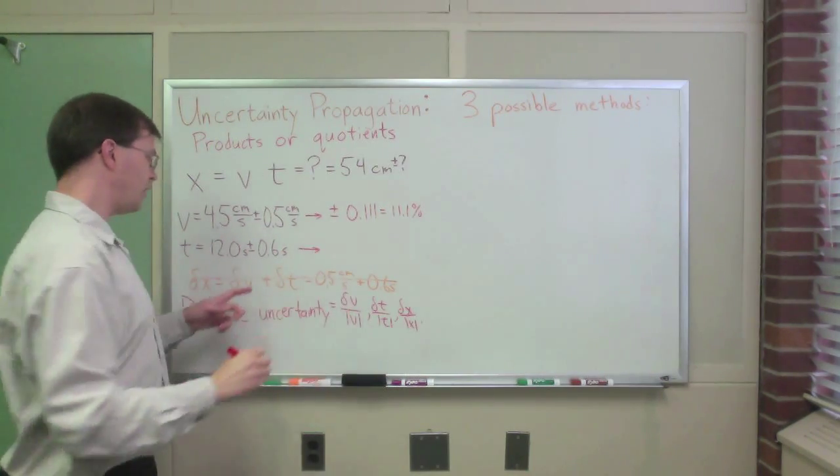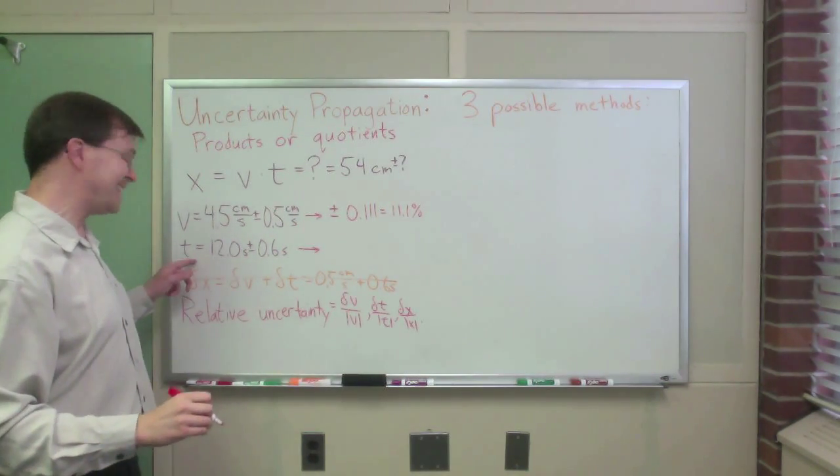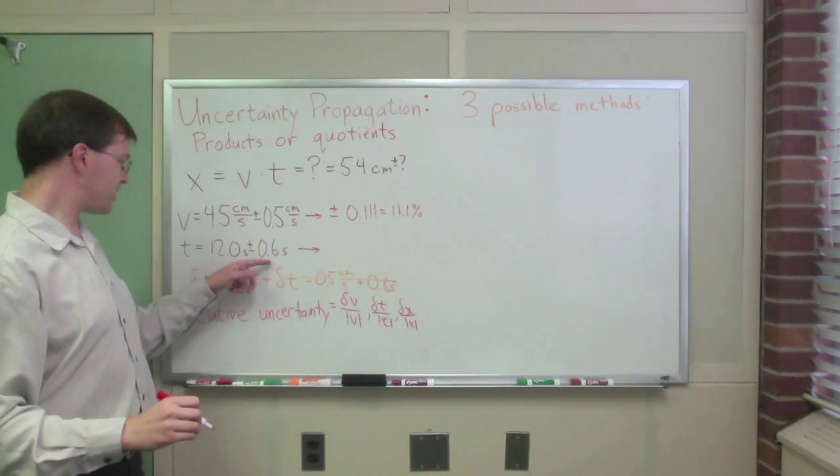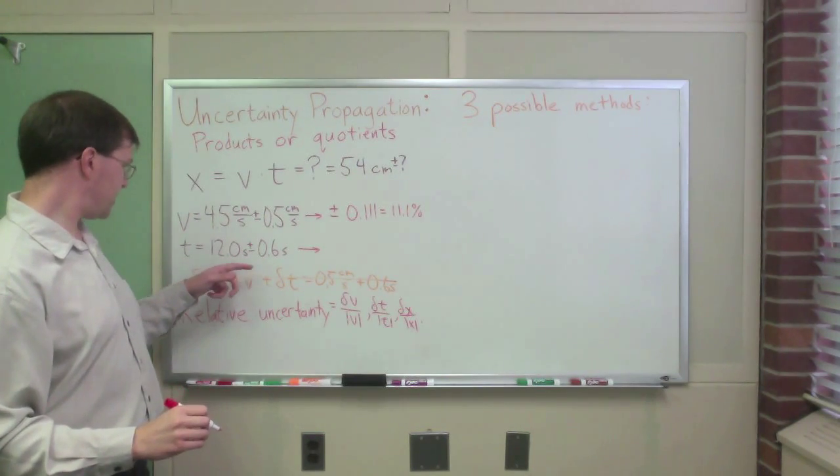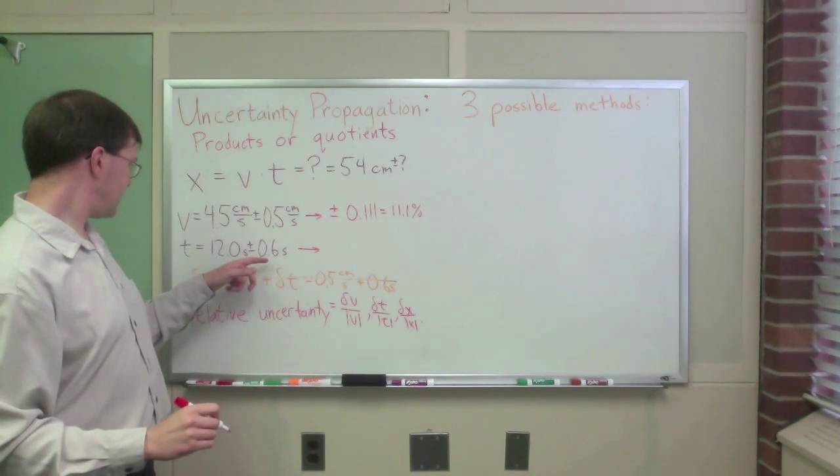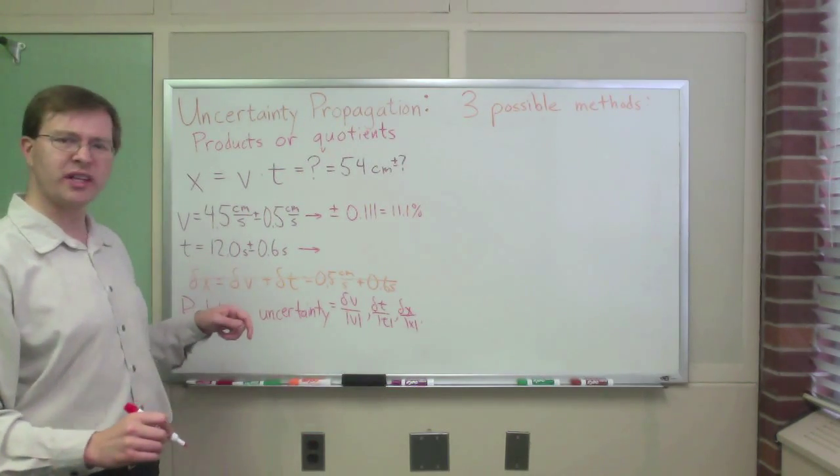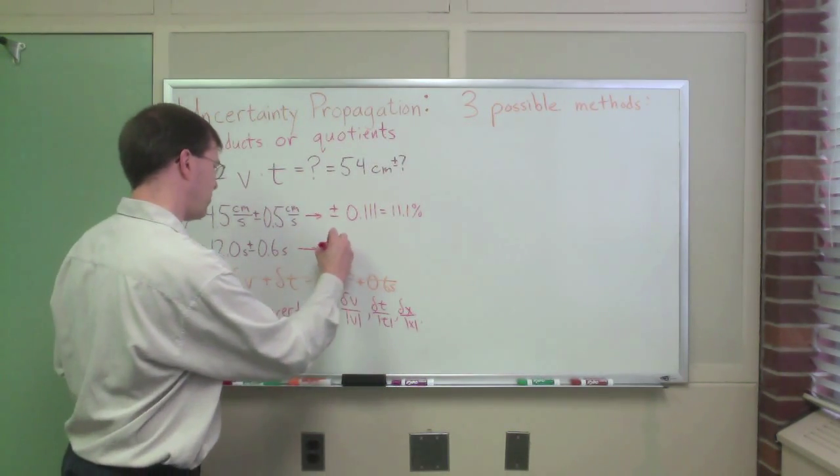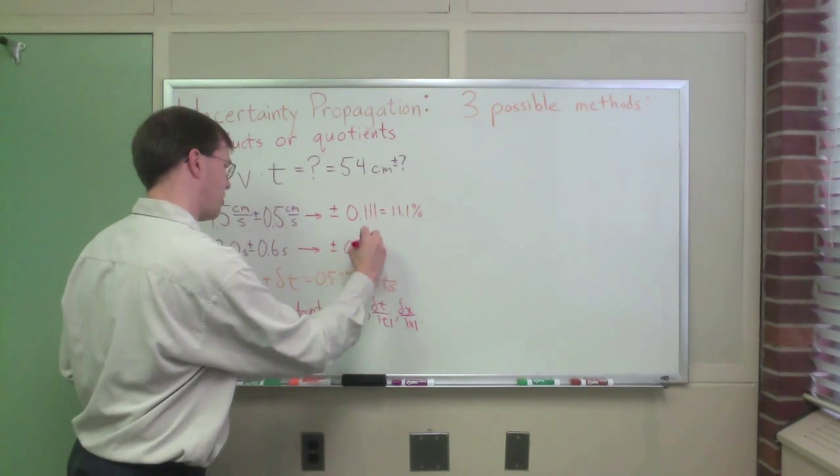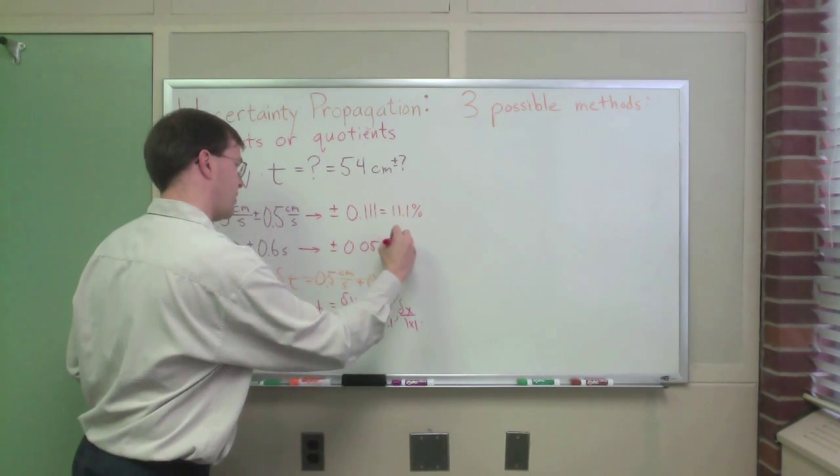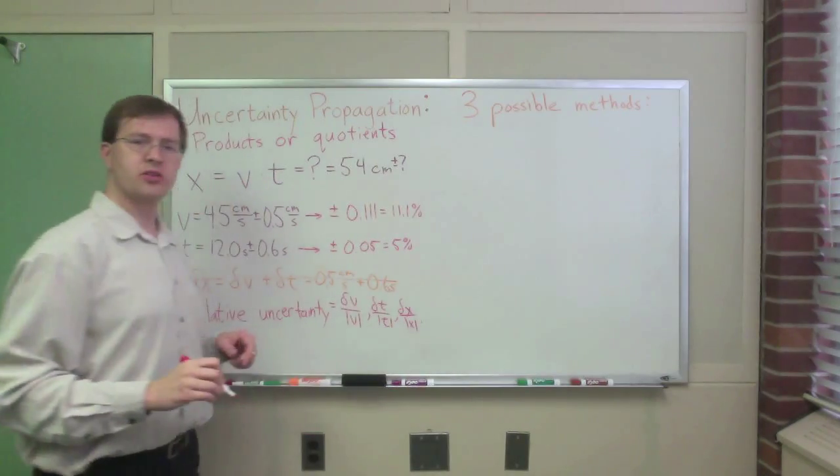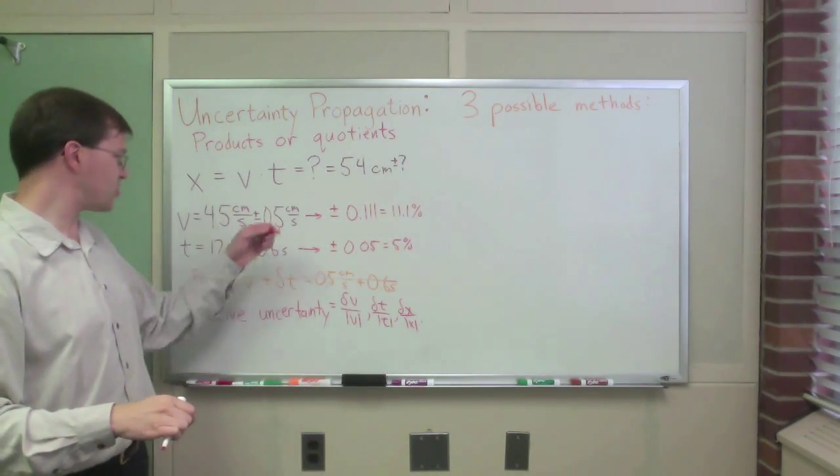Here, the relative uncertainty in t, 0.6 over 12, is going to be, let's see. If it were 6 over 12, that would be 1 half. So this is 1 over 20, 5%, plus or minus 0.05, which is 5%. So those are my relative uncertainties in these two quantities.